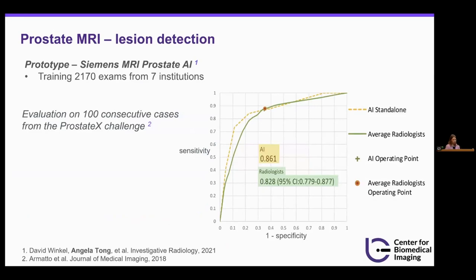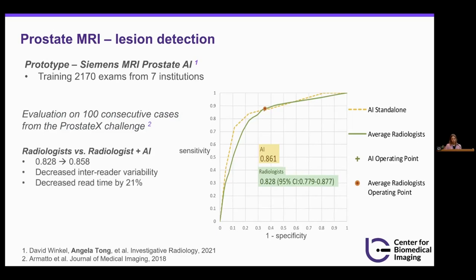They evaluated this tool on 100 consecutive cases from the Prostate X Challenge. Results showed that the AI is non-inferior to the radiologist — they perform quite similarly. Interestingly, they also compared radiologists versus radiologists given this AI tool, so radiologists could see the AI prediction when making their own interpretation. The AUC goes up from about 0.83 to about 0.86. It decreased inter-reader variability and decreased read time by 21%, so giving the AI prediction to the radiologist helps in a number of ways.